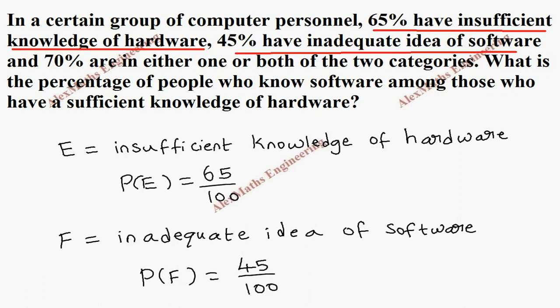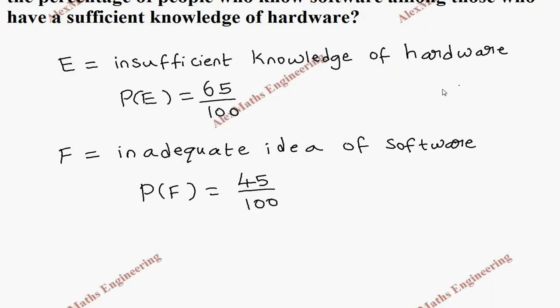Then, they say 70% are in either one or both of the two categories. It means they have given P(E union F), which is 70 by 100.